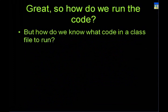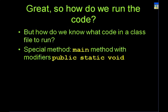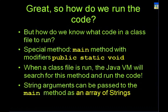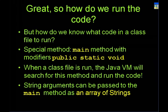How does Java know what code in a class file to run? There's a special method in a class known as the main method. It has three modifiers: 'public' means anybody can call it, 'static' is a bit complicated, and 'void' because the main method doesn't actually return anything. When you run the class file, the Java Virtual Machine will look for this particular method and execute it. You can also pass arguments into the main method, allowing you to modify how the program works based on the arguments given.